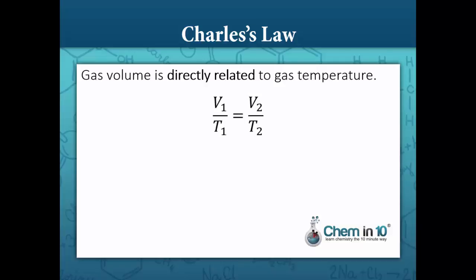V1 over T1 is equal to V2 over T2, where V1 is the initial volume, T1 is the initial temperature, V2 is the new volume, and T2 is the new temperature.